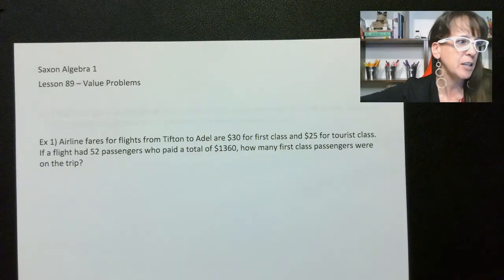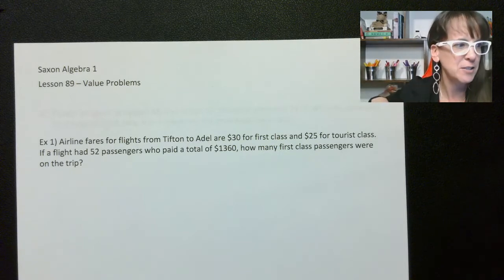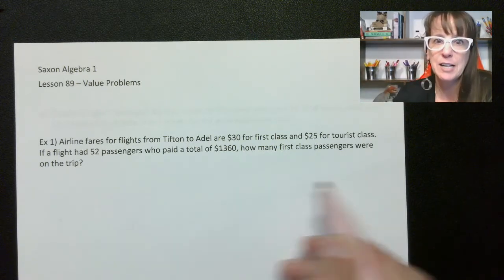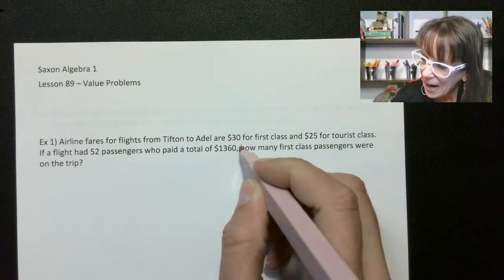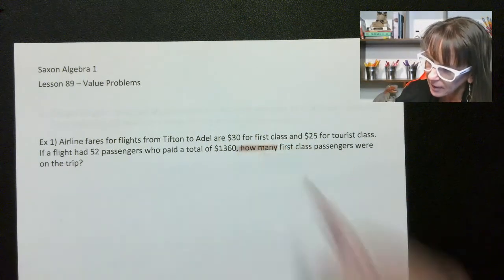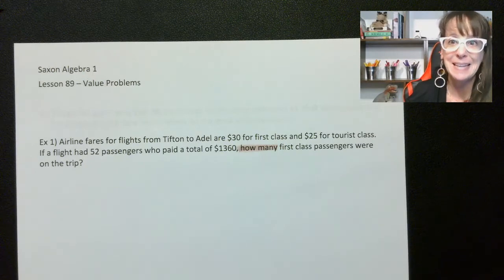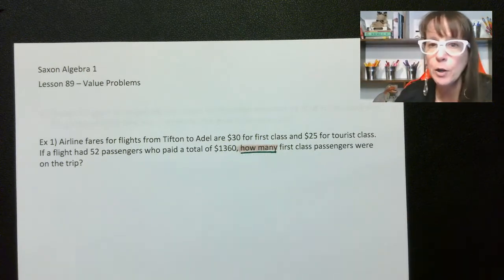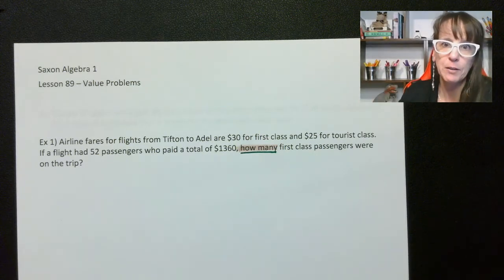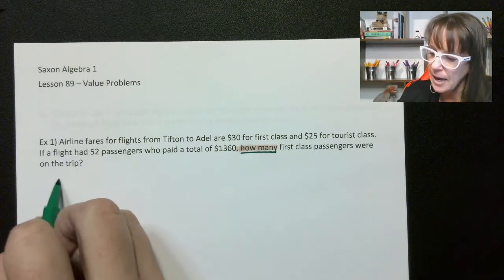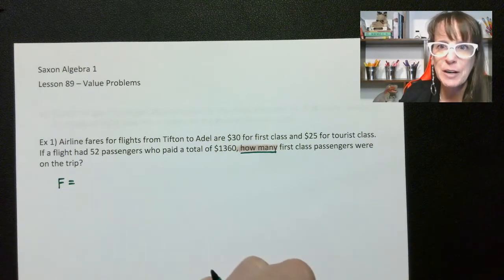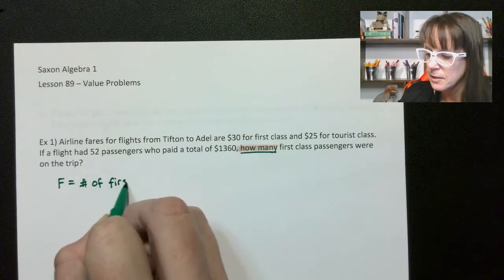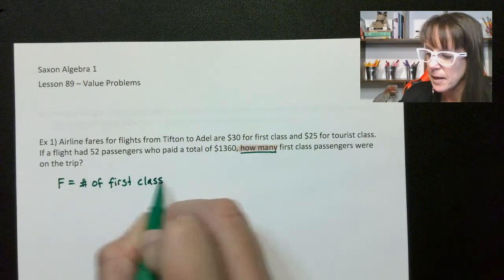The first thing you want to do — I'm going to use my new highlighters — is look at the question: how many first class passengers were on the trip? 'How many' is the key. We want to know the number of first class passengers and the number of tourist class. So F equals — and you don't just write 'first class' here — you write 'number of first class passengers.'